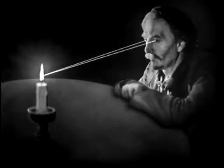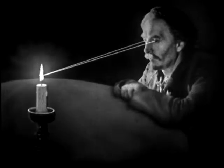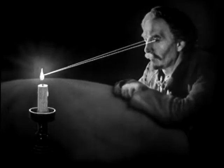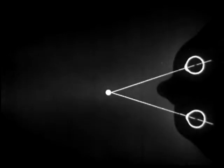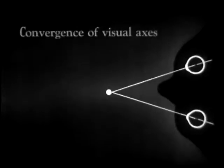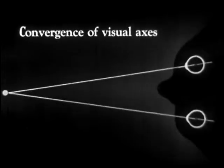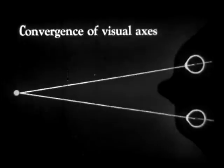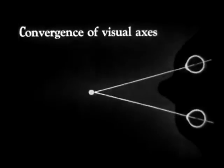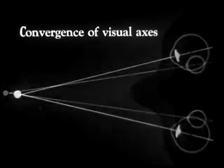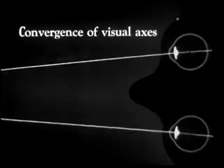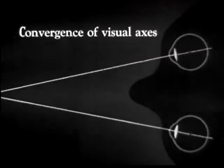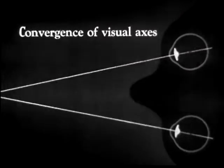It is also necessary that both our eyes be fixed upon the same point in order that we may see an object clearly. Thus, as an object approaches us from a distance, our eyeballs turn accordingly. This movement is called the convergence of visual axes, and is shown here as the object approaches and recedes. In addition, we see the lenses accommodating their optical shape under the combined influence of blurred image and eyeball movement.